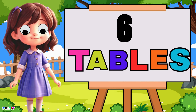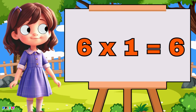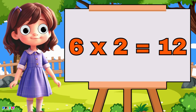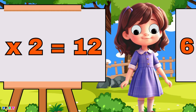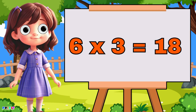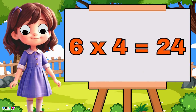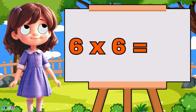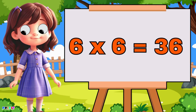Six tables. Six one's are six, six twos are twelve, six threes are eighteen, six four's are twenty-four, six five's are thirty, six six are thirty-six.